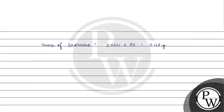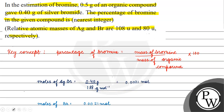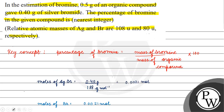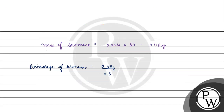Now, percentage of bromine will be equal to mass of bromine divided by mass of organic compound, into 100. That is 0.168 divided by 0.5, into 100. This comes out to be 33.6 percent.